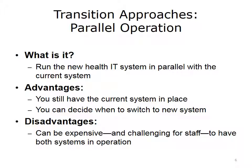A second transition approach is parallel operation. With a parallel strategy, you introduce the new system without taking the old system out of service. In this way, you can decide if and when the new system is operating effectively. Can the new system handle the volume? Can it handle the response time requirements? Does all the intended functionality work as intended? By having the current system still running, it is easier to compare the deliverables and performance of the new system side by side with the current system. Then you can turn off or wind down the current system, leaving only the new system to operate. One major source of transition risk is mitigated because the new system will be running in the true operational environment.